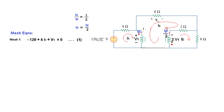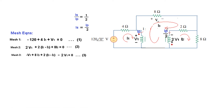For mesh 1, going around the loop: minus 120 — since the angle is 0, we write simply 120 — then 4 times I1, plus voltage V1 equals zero. For mesh 2, starting from here: 2V1 plus 2(I2 minus I1) plus 8I2 equals zero. For mesh 3 — I had separated the coils so you can clearly see — the equation is: minus V1, then 8I3, then 2(I3 minus I2), then minus 2V1 equals zero.